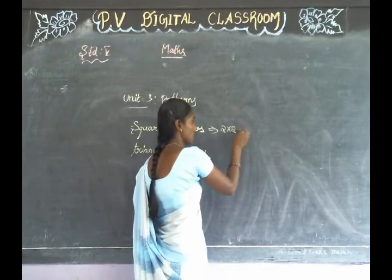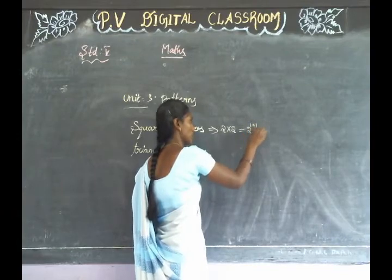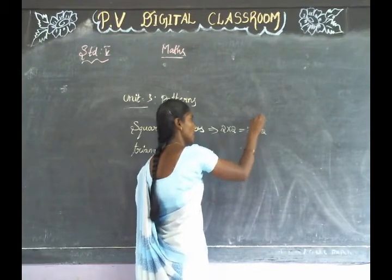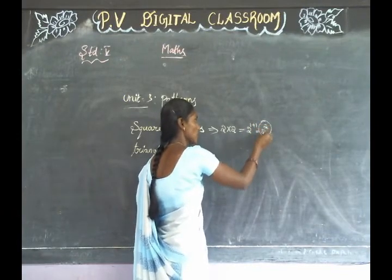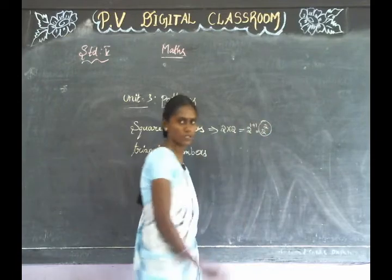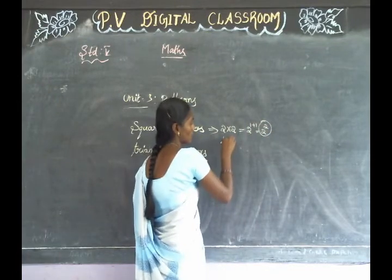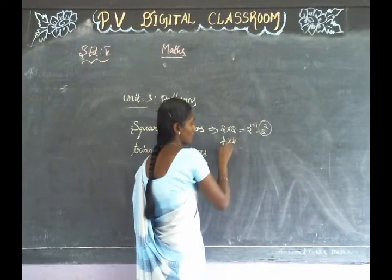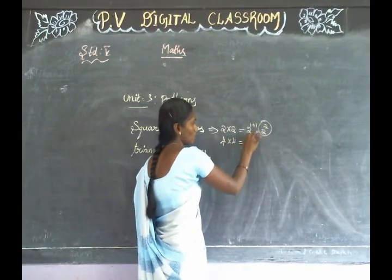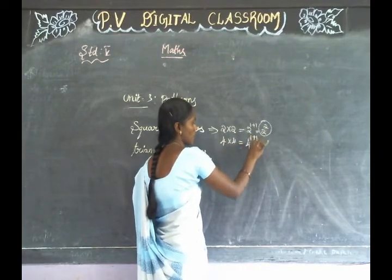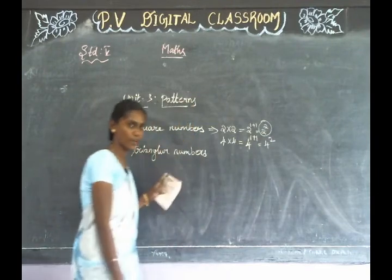Square numbers: same number multiplied by itself — equal powers to add. For example: 2 into 2 is 2 squared. Next: 4 into 4 is 4 squared. This is a square number.